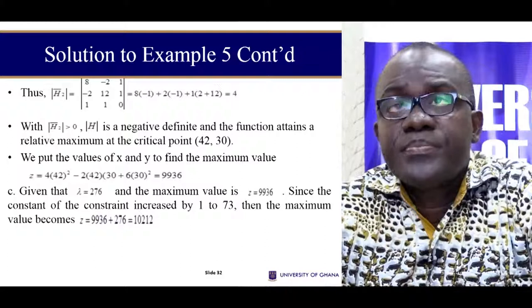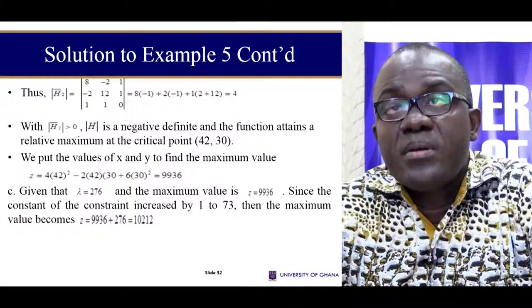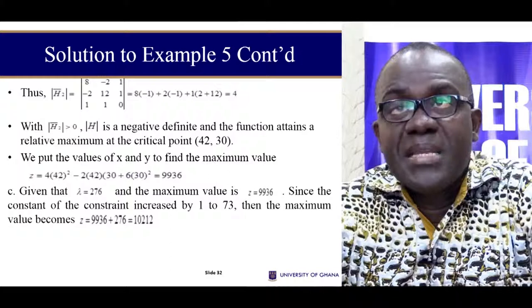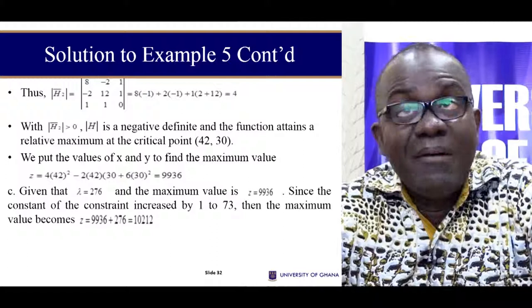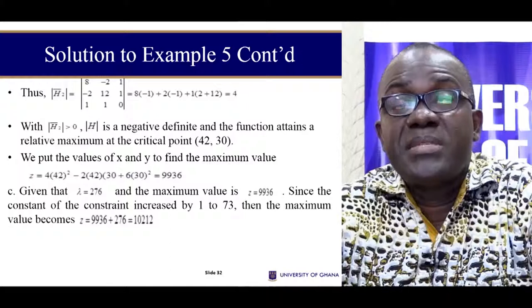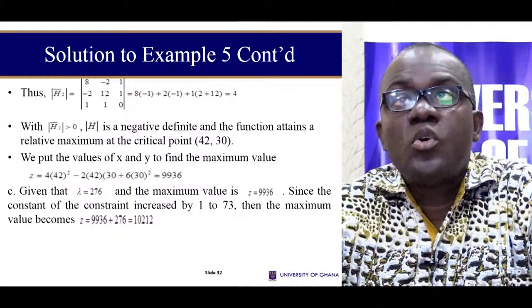There is one thing I have to tell you. Notice that in a situation where we have a function with two variables, the Bordered Hessian becomes a three-dimensional determinant, even though we have given this one H2. The convention is that the value you put here depends on the number of variables of interest, not on the number of variables in the equation. In this equation the third variable is your lambda, but the real variables we are interested in are x and y. So we use H2 here.